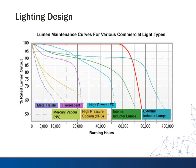Induction lamps don't get much recognition, but they should — they really hold good value and go for a long time, with some actually rated for 100,000 hours. The red reference line shows what we'd ideally like to see in a lamp — staying at 100% until near the end of its life, then dropping off — but nothing really acts that way. That's just the ideal case.